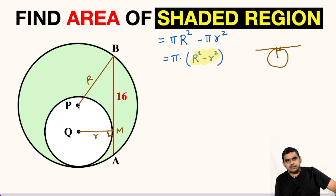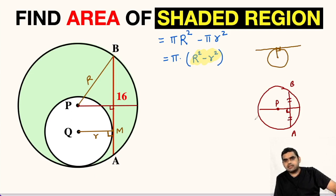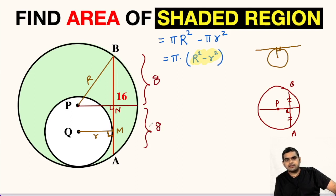Let us do one construction here. From point P, let us draw a line segment perpendicular to AB. By construction, this angle is 90 degrees. We have another theorem: if a diameter of a circle is perpendicular to any chord — in our case AB is the chord and P is the center — then it will be a perpendicular bisector. So if this point is N, then BN equals NA. Since the total length is 16, BN will be 8 units and NA will also be 8 units.